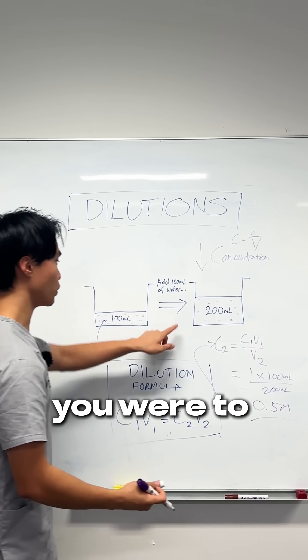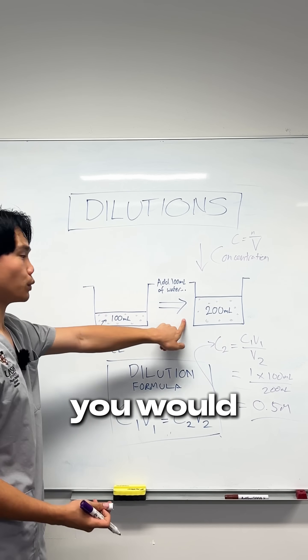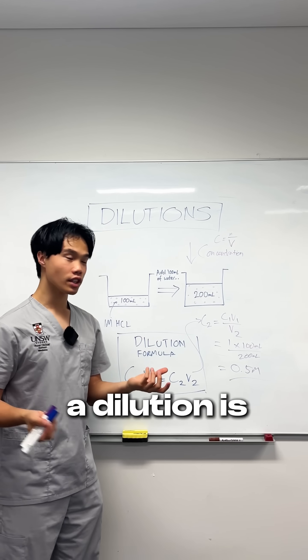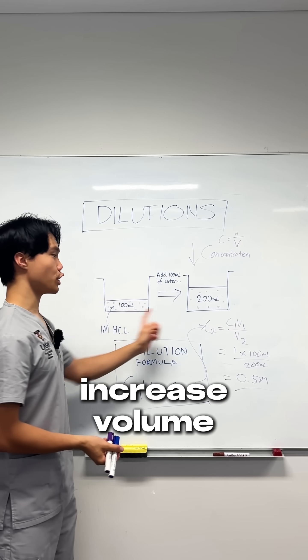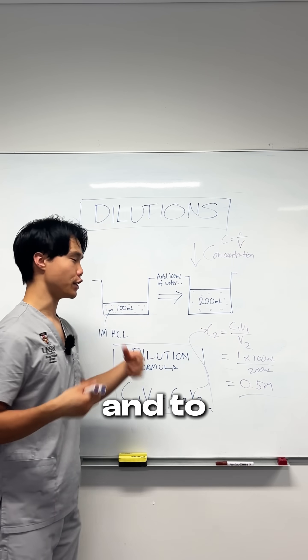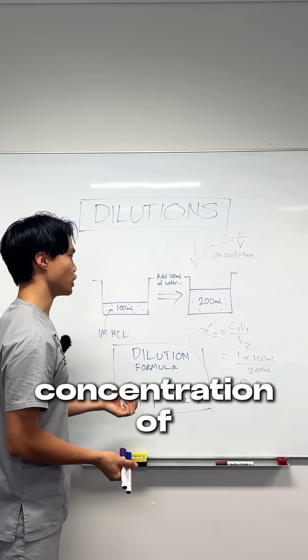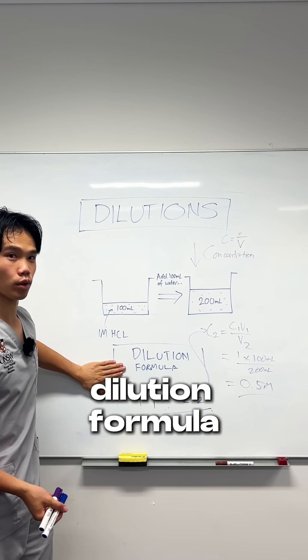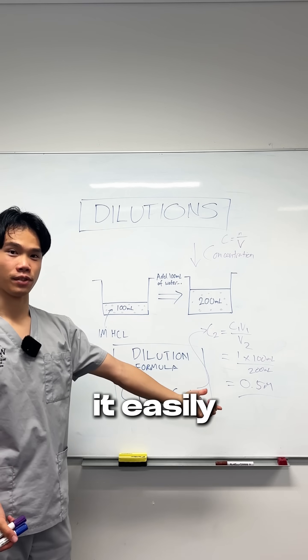This totally checks out because if you were to double the volume, you would expect the concentration to halve. To summarize: a dilution is where you increase volume and therefore decrease concentration. To find the concentration of that diluted solution, use the dilution formula — you'll find it easily.